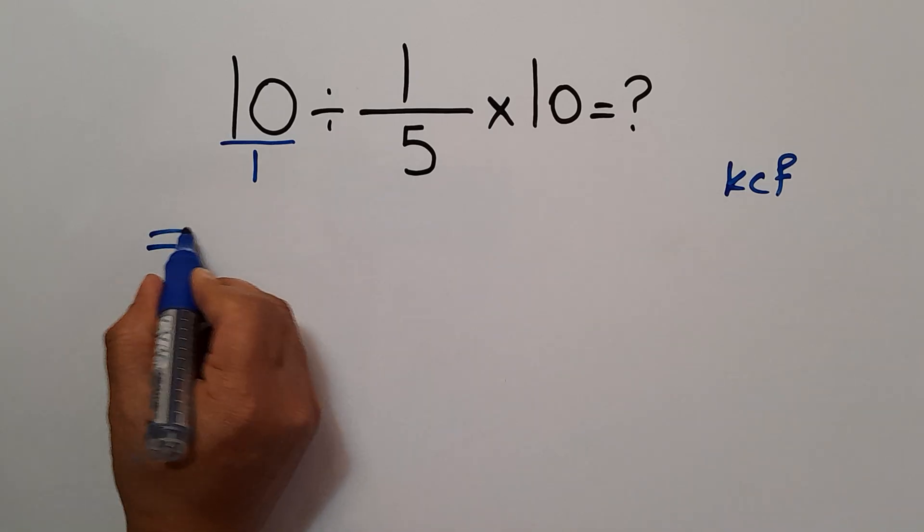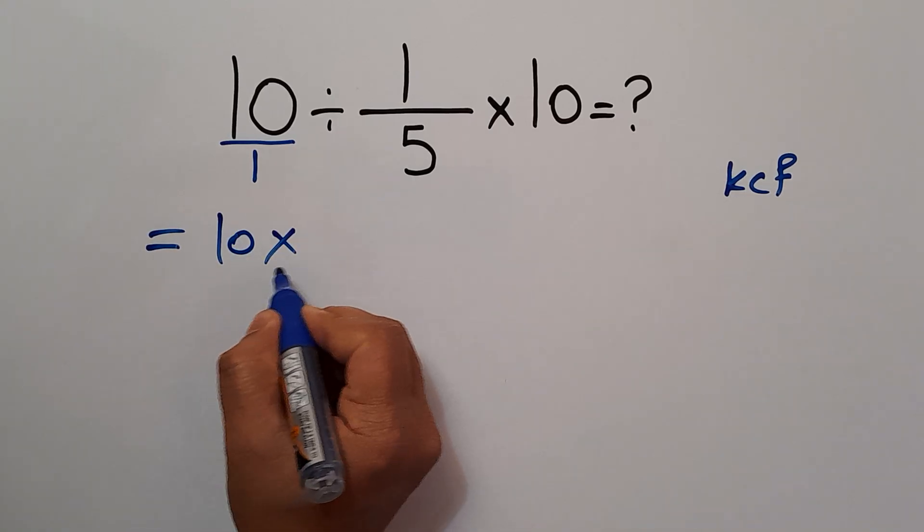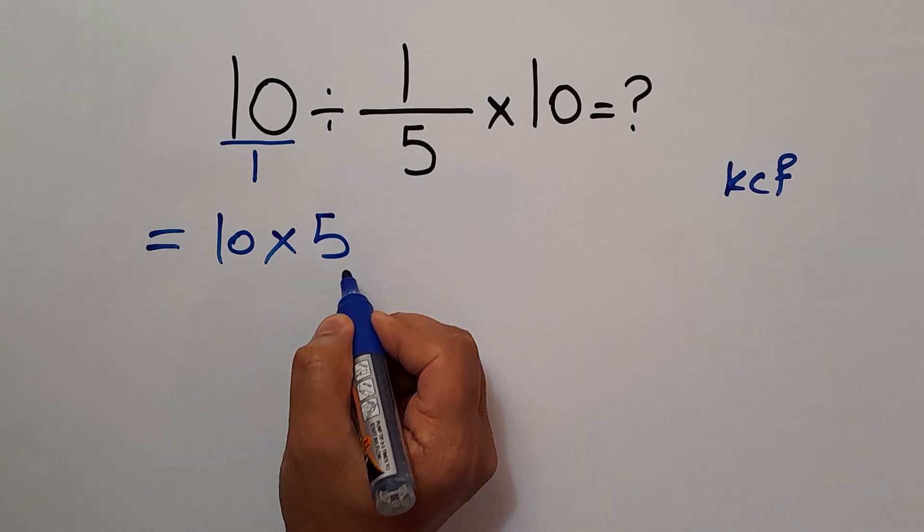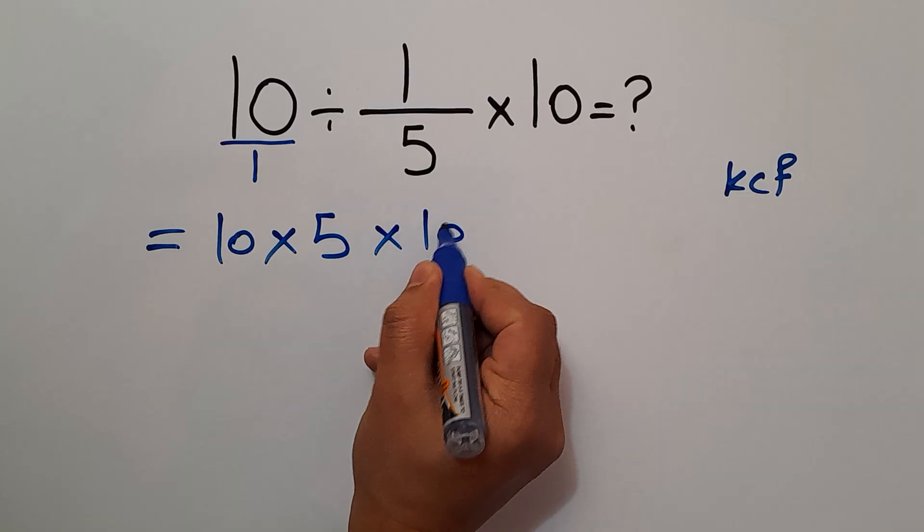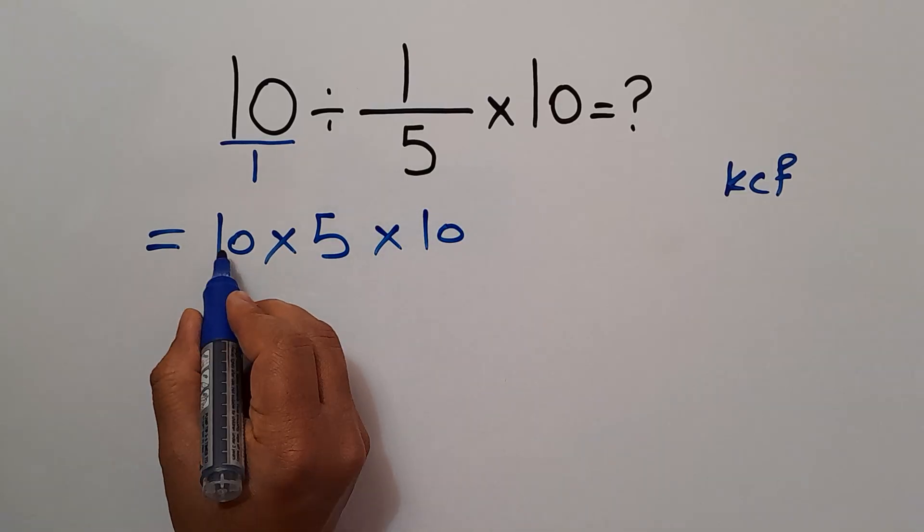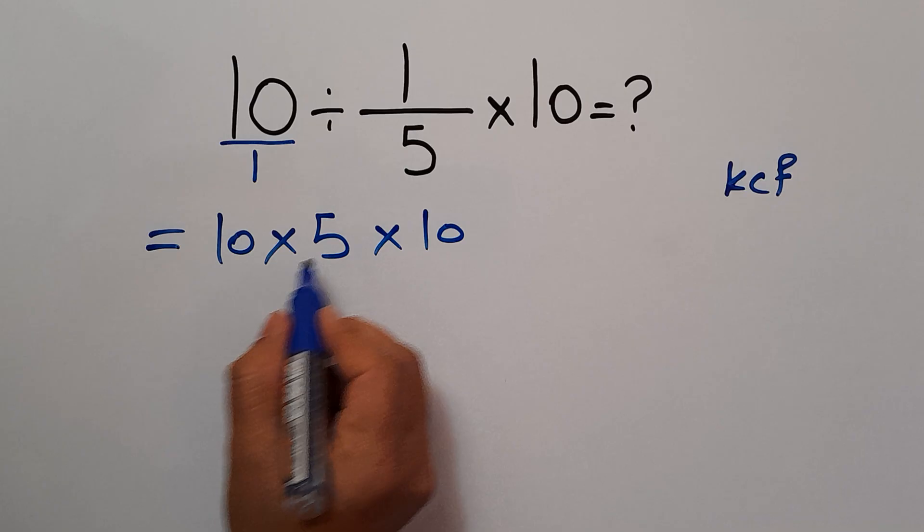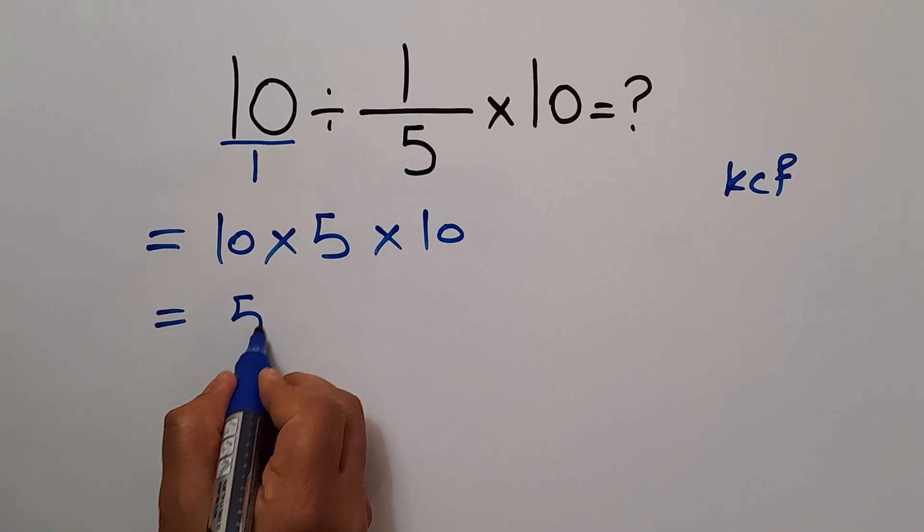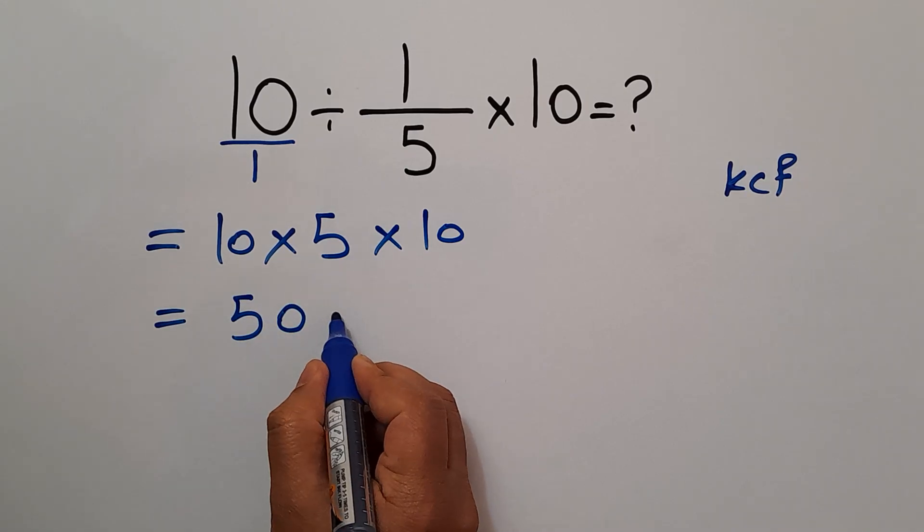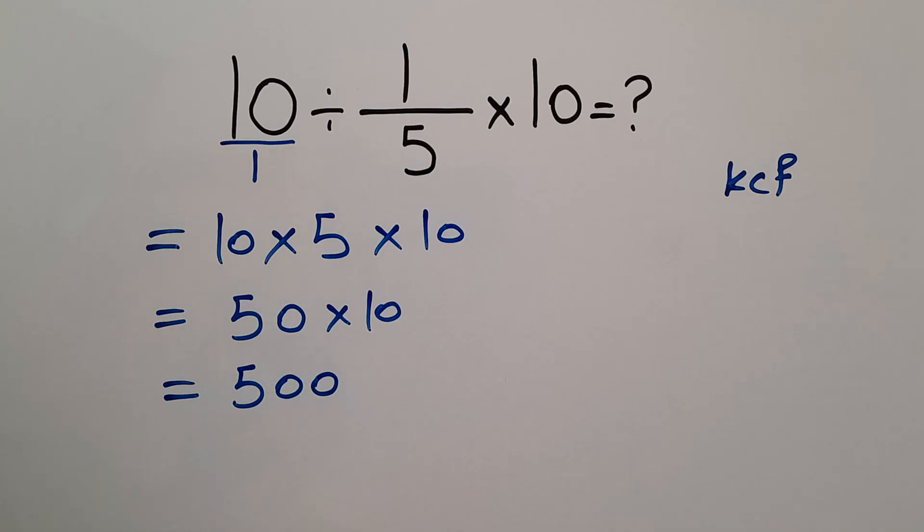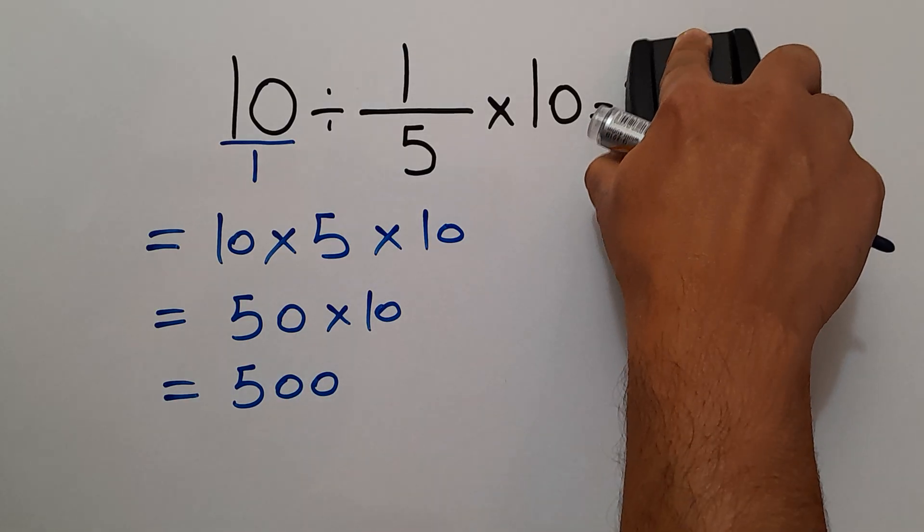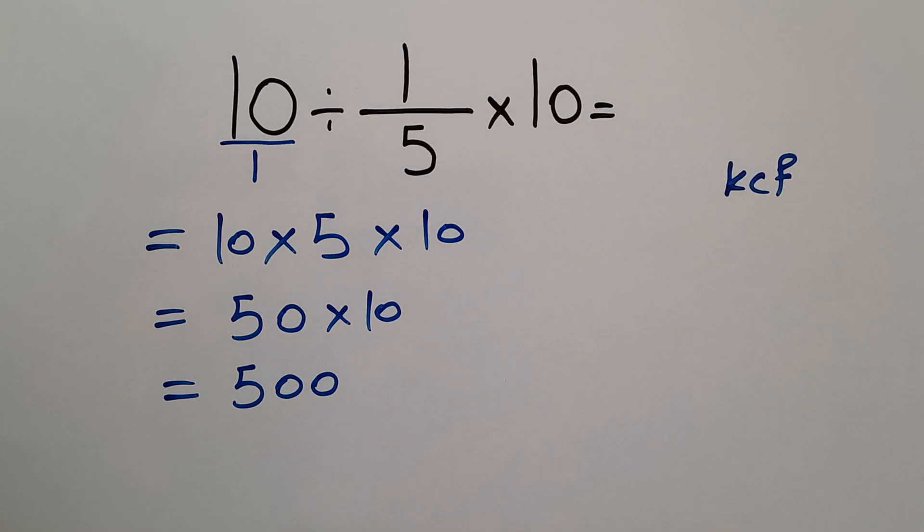10 times 5 times 10. 10 times 5 gives us 50, so 50 times 10, which equals 500. So our final answer to this problem is 500.